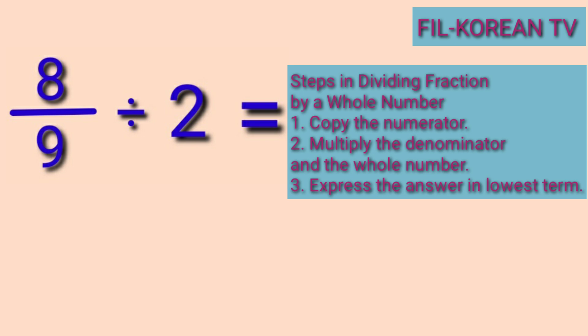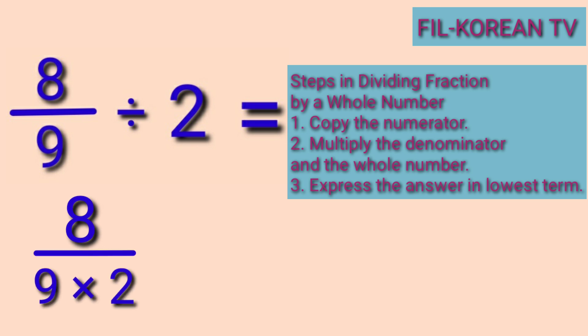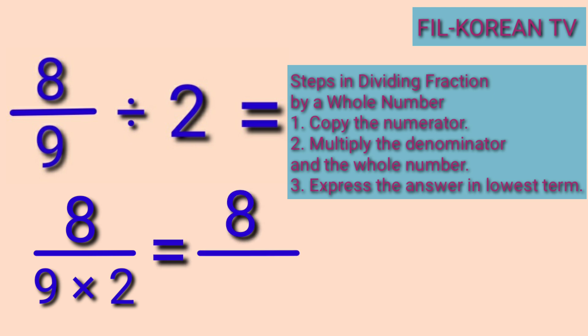Just copy the numerator 8, and then multiply the denominator 9 by the whole number 2. Write the numerator 8, then 9 times 2 equals 18.